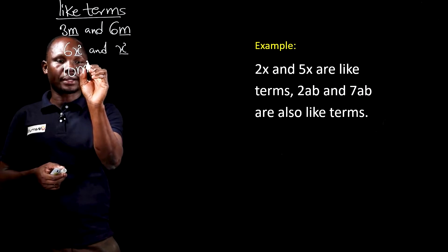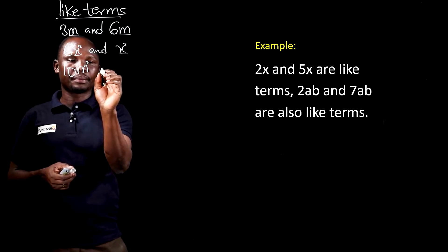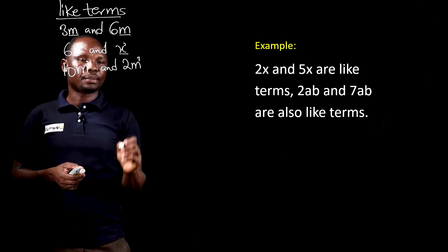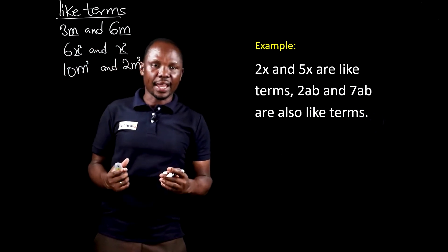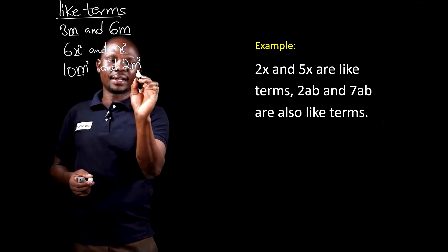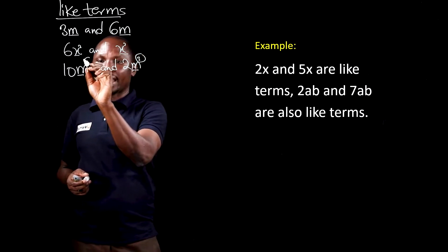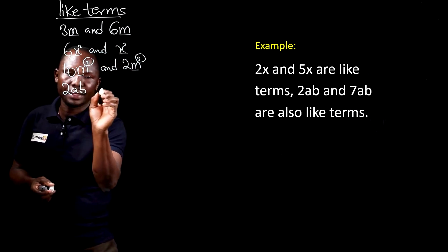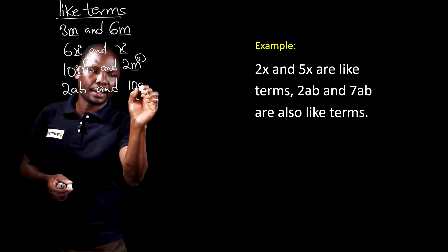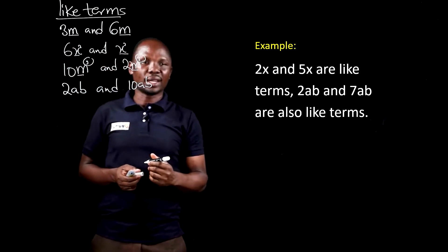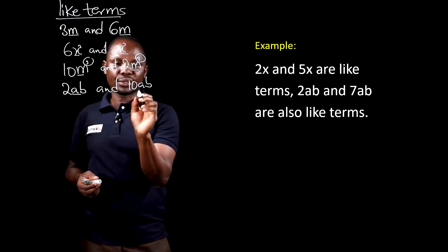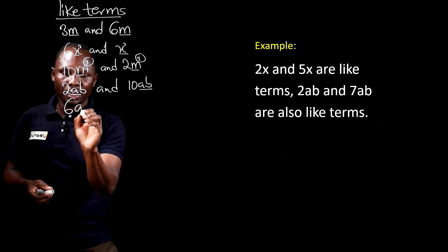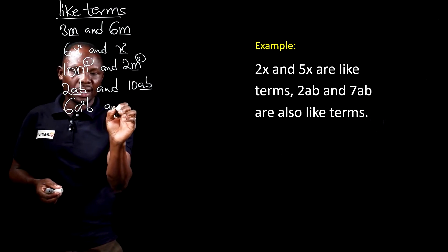If we have 10m cubed and 2m cubed, they are also like terms because the variables are the same and they also have the same exponents or powers. So, if we have 2ab and 10ab, they are also like terms because the variables are the same.